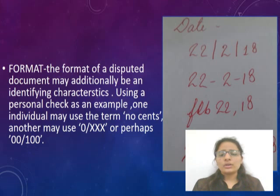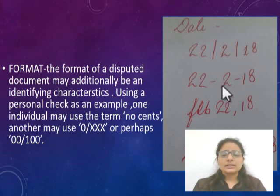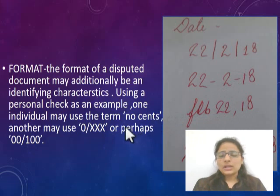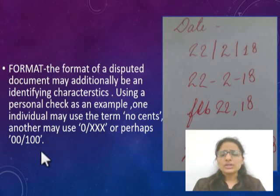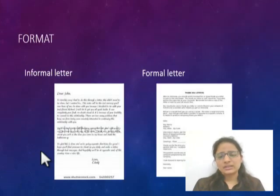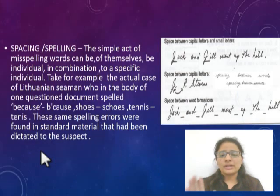Next is format. The format of a document may additionally be an identifying characteristic. For example, some people write dates one way, some write them differently, and some write it as '22, 18.' In a check, some write 'no cents,' some write '0/100' or '00/100.' So with the help of format, we can individualize the person. The format of informal and formal letters is also different — for instance, a diary entry format differs from that of a formal or informal letter.